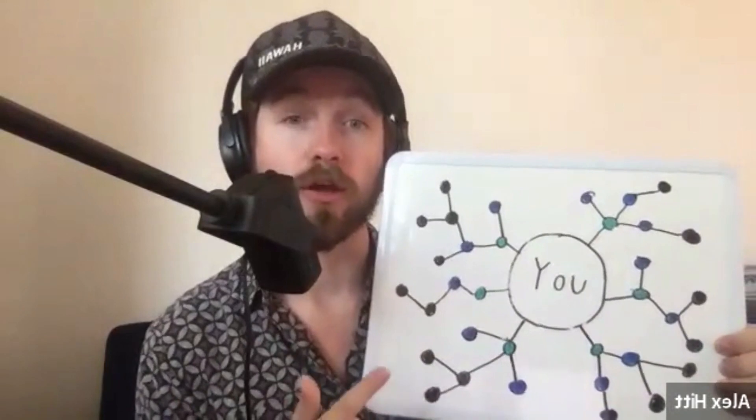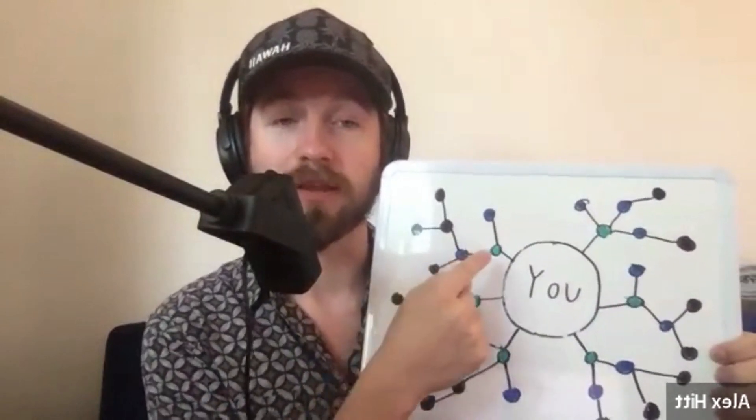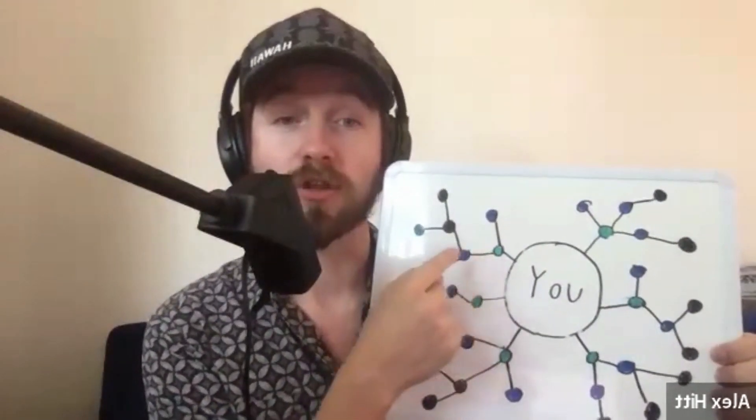In the center we have you, and these are your connections on social media. The green connections — the ones that have one line straight to you — are your followers or people that you're following. Those are your first degree connections. These blue dots are two connections away from you — maybe somebody who's following you's follower, or somebody you're following's follower. This is called an affinity cluster, and this is a data science term.